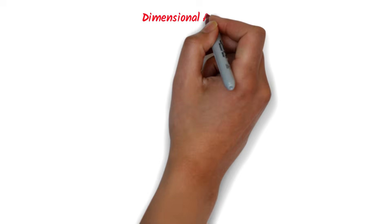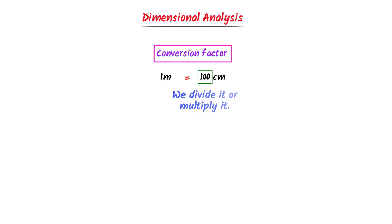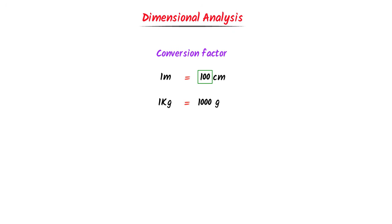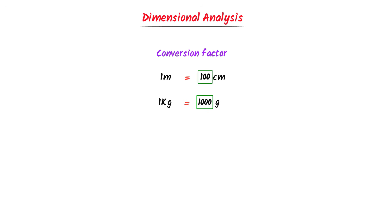Now, what is the easy trick of dimensional analysis? Firstly, let me teach you about conversion factor. We know that one meter is equal to one hundred centimeters. Here, this one hundred is known as the conversion factor. It means that if we convert meter to centimeter, we have to multiply or divide by this conversion factor. Similarly, one kg is equal to one thousand grams, so the conversion factor is one thousand between kg and grams. Note that the conversion factor is a number used to convert units.